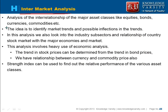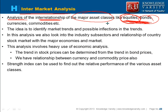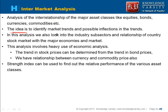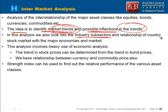The next topic is intermarket analysis — the analysis of the interrelationship of major asset classes. While previously we covered equity and bonds individually, intermarket analysis looks at the interrelationship among asset classes like equity, bonds, currency, and commodity. The idea is to identify market trends and possible inflection points in those trends, examining industry subsectors and the relationship of the stock market with major economies.